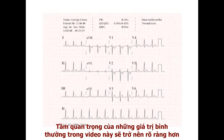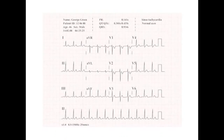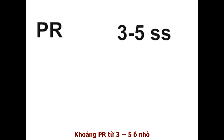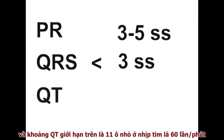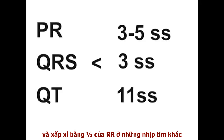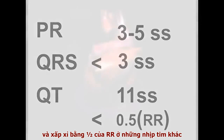The importance of the normal values outlined in this video will become increasingly obvious as we discuss the ECG in disease states. Memorise them. The PR interval: 3 to 5 small squares. The QRS complex duration: less than 3 small squares. And the QT interval: an upper limit of just over 11 small squares at a heart rate of 60 beats per minute, and approximately less than half the RR interval at other heart rates.